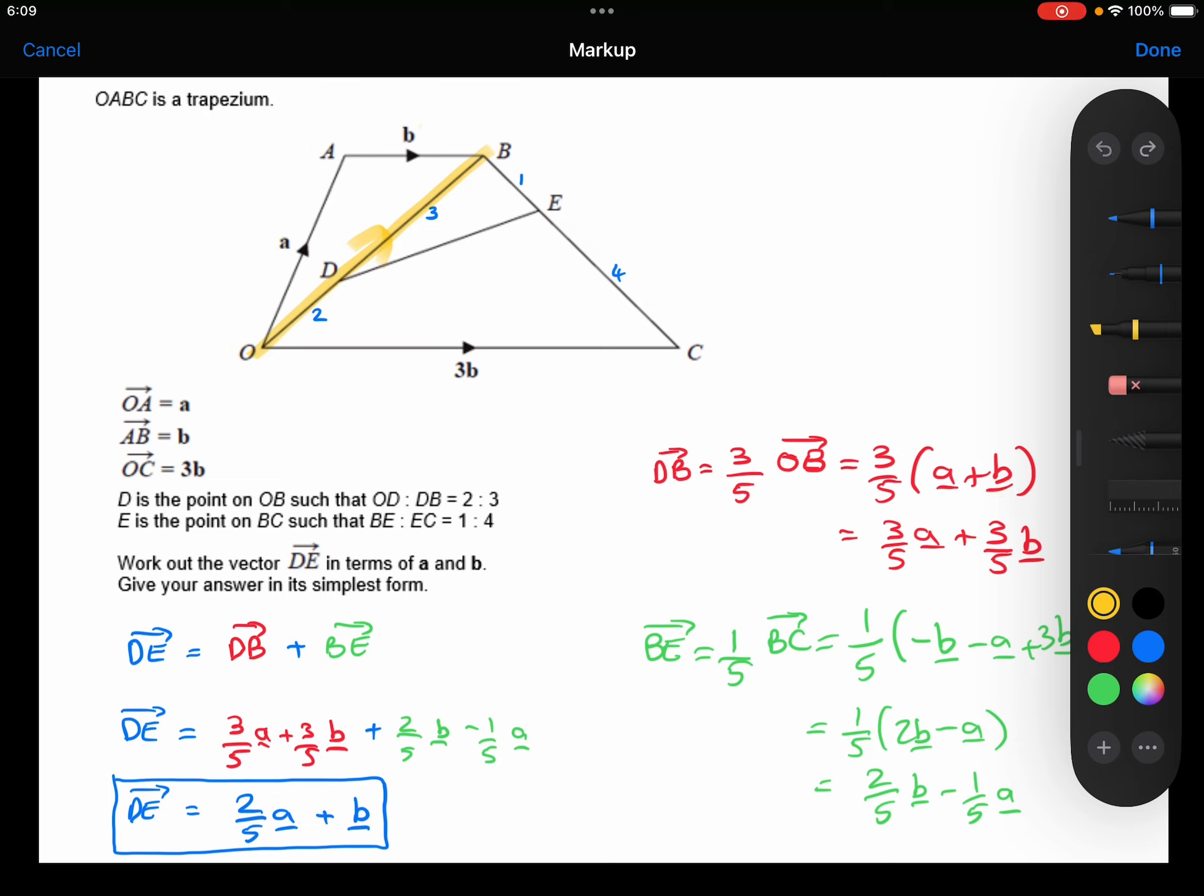So 3 fifths of a plus b is 3 fifths of a plus 3 fifths of b. And as you can see, I've then substituted that in here.